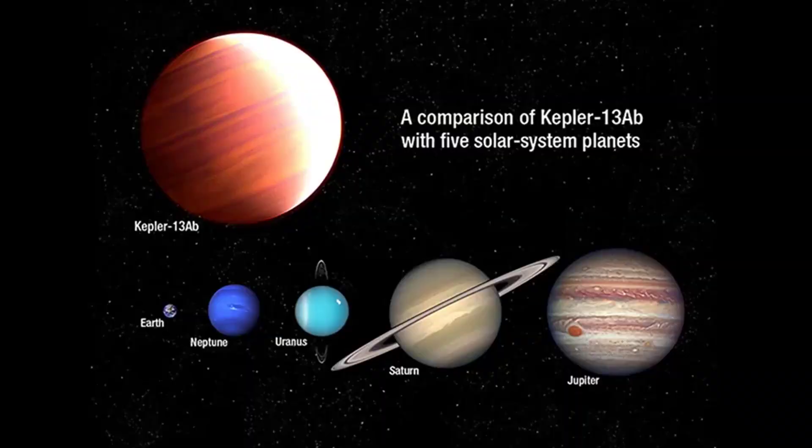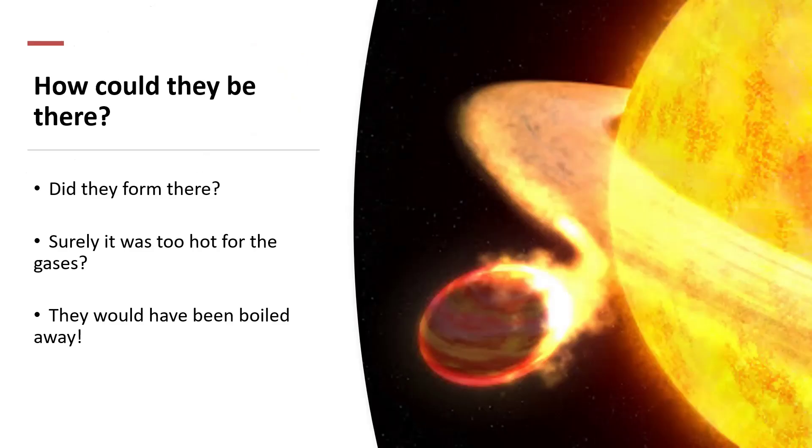There's one here, Kepler 13AB. This is a super Jupiter planet, and some of them were well larger. The structure of our solar system seemed to be nothing like what we were originally finding. And the question really is, how did these enormous gas giants manage to form or manage to exist so close to their stars? They must still look like comets almost, hurtling around the star, the temperature being so ferocious that a lot of material must be boiling away from them.